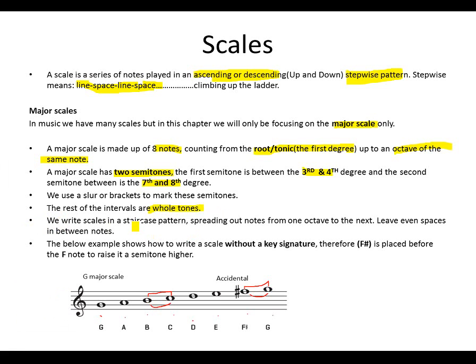We write scales in a staircase pattern, as we have mentioned, spreading out notes from one octave to the next. Leave spaces in between, and we have already seen our examples below. Remember that you place an accidental before a note if accidentals were not included. Like here, this F sharp was placed to raise the F, making it an F sharp because there were no key signatures included at the beginning of our staff.